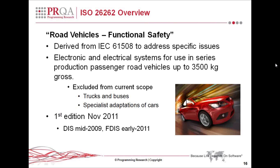The title of this standard is Road Vehicles, Functional Safety. It has been derived from IEC 61508 to address specific issues and covers electronic and electrical systems in series production passenger road vehicles. It doesn't currently include trucks, buses, or specialist adaptations of cars for disabled drivers — this applies to series production road vehicles only.